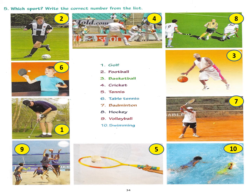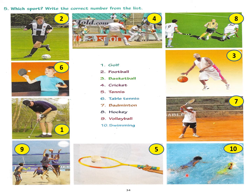Then number 4 is cricket — you can see cricket being played here. Number 5 is tennis — you can see the tennis racket and the ball. Then number 6 is table tennis — you can see this person playing table tennis. Then number 7 is badminton — this man is playing with a racket and shuttlecock. Then number 8 is hockey — you can see the person playing hockey with a stick in their hands. Then number 9 is volleyball — you can see the ball being thrown into the other court. And number 10 is swimming — you can see a person swimming in water.